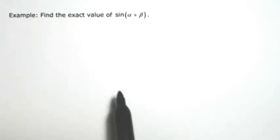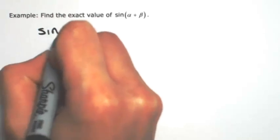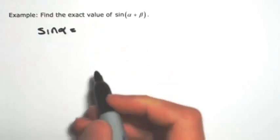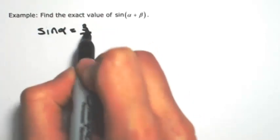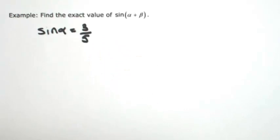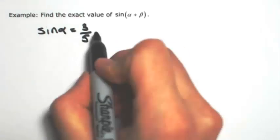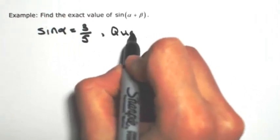Find the exact value of sine of alpha plus beta. I'm going to give you some information about alpha and beta. First, the sine of alpha equals three-fifths. That in itself is not enough information because sine is positive in two quadrants, so I'm going to tell you this is quadrant one.